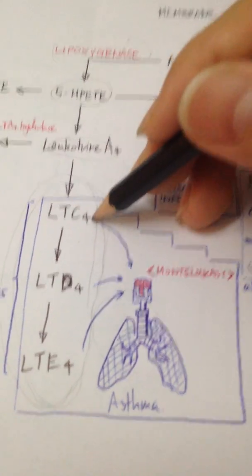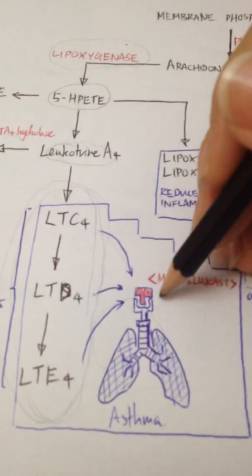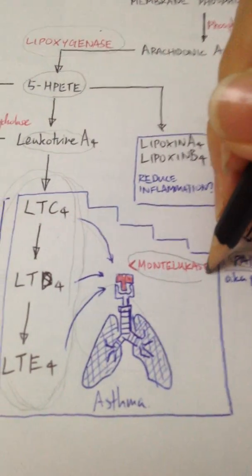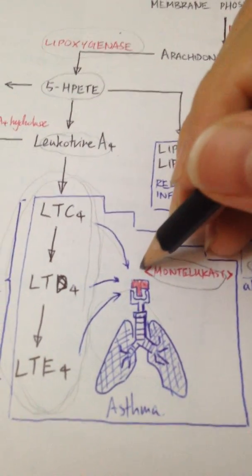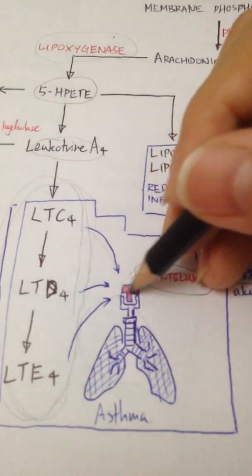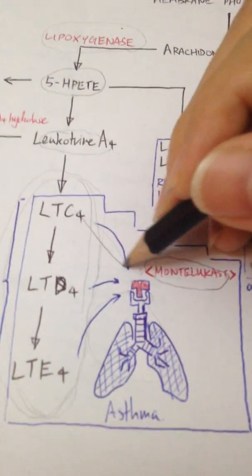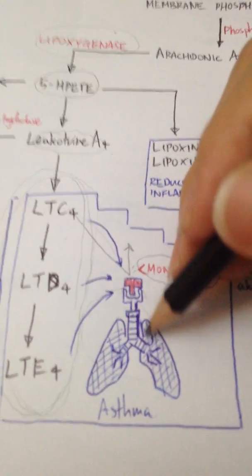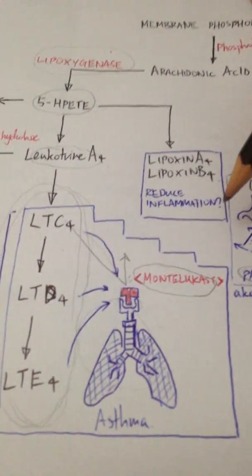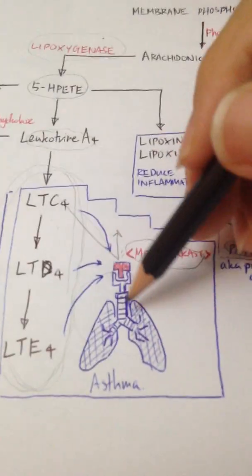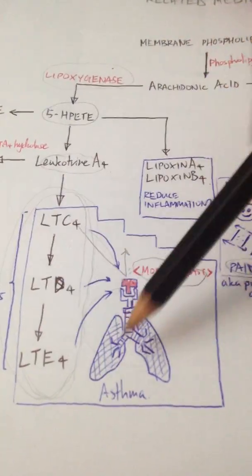We have drugs like montelukast, which is actually a receptor antagonist, so it competitively binds with the receptors so that all these leukotrienes can't bind onto the lung receptors, hence preventing asthmatic attacks. If you remember, in asthmatic patients we have beta blockers, which have more autonomic action, but we also have steroids.